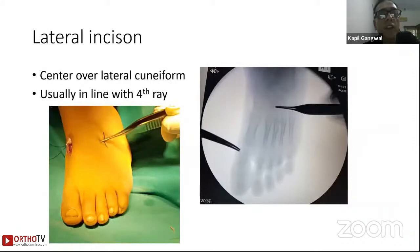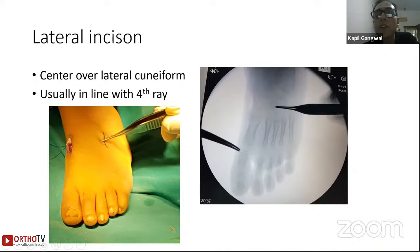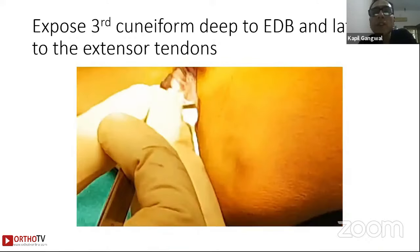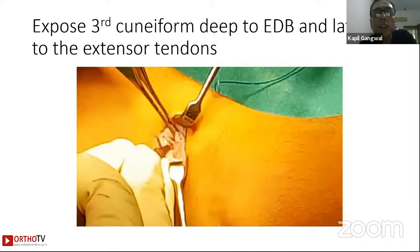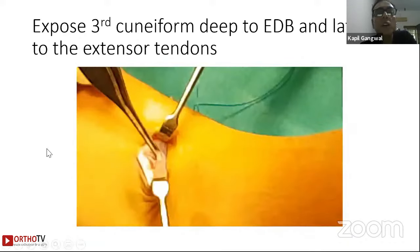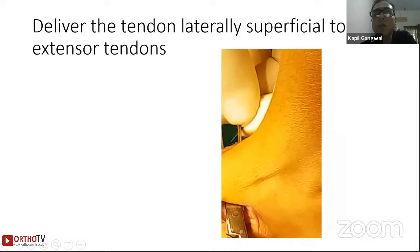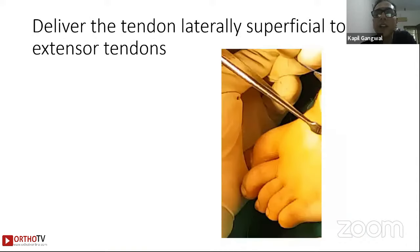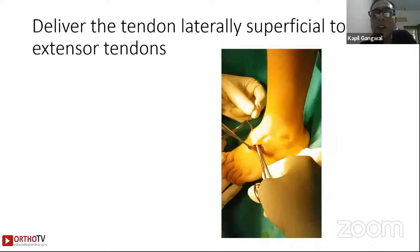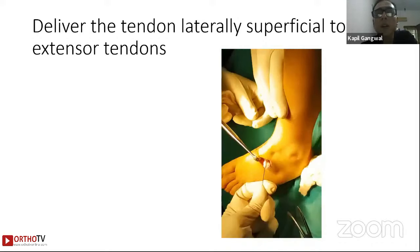Once the medial side is done, make a lateral incision centered over the lateral cuneiform — usually in line with the fourth ray, it's a dorsolateral incision. You lift off the extensor digitorum brevis from the lateral side, staying lateral to the extensor tendons. Once the cuneiform is exposed, tunnel artery forceps and pull the suture from the medial side, bringing the tendon onto the lateral side, passing under the extensor digitorum brevis and superficial to the other extensor tendons.